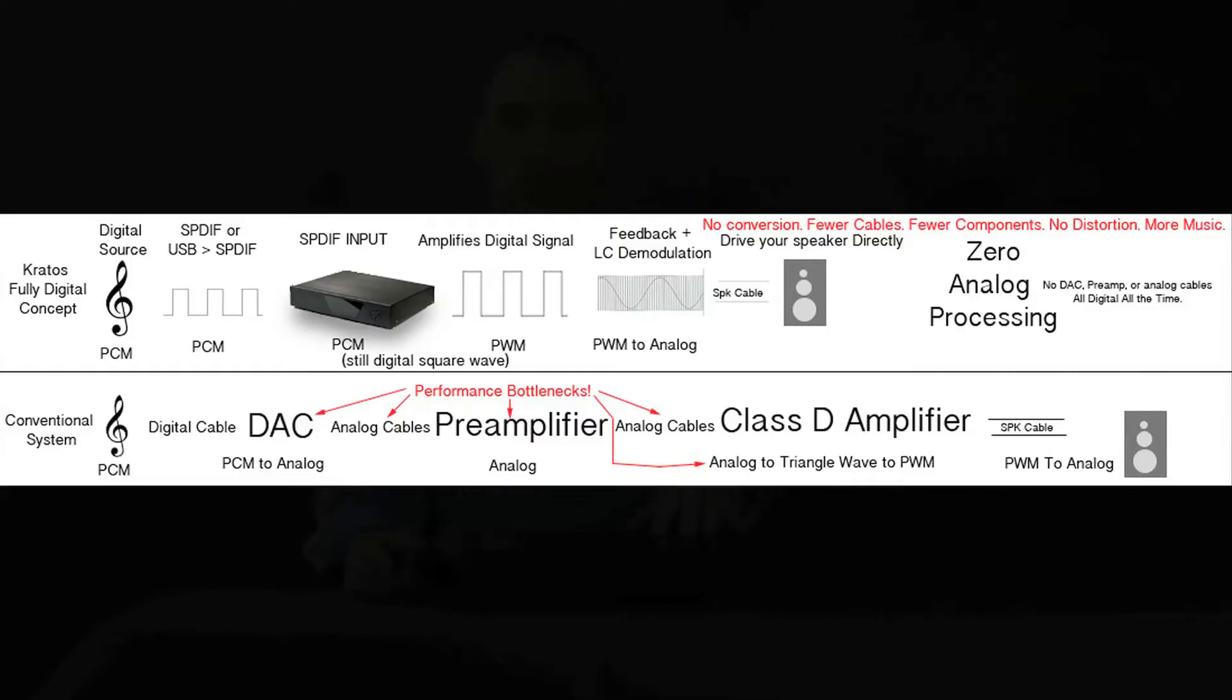So it's a very low distortion type of sound. The way that this amplifier works is it takes a PCM input, which is a square wave. That square wave is then reclocked by our clocking circuit.